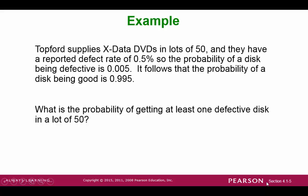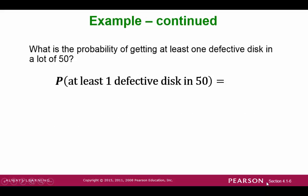Let's take a look at an example. Suppose we have a collection of 50 DVDs that reports a defect rate of 0.5%. The probability of getting a defective disk is 0.005, and the probability of getting a good disk is 0.995. They are complements of each other, defective and non-defective. The question is, what is the probability of getting at least one defective disk?